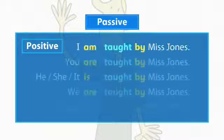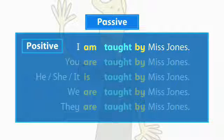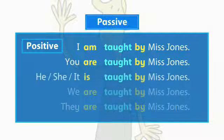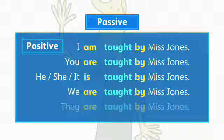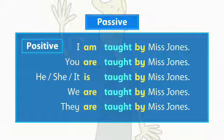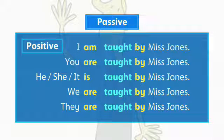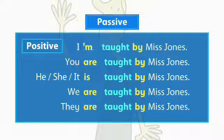We form the passive like this. We use 'be' in the present tense with the past participle. We use 'by' with the passive to say who does the action.